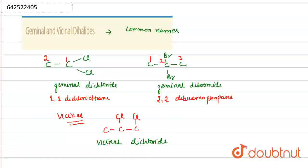Similarly, if we take example for Bromine, one Bromine is attached here, another Bromine on the adjacent carbon, then the name will be Vicinal Dibromides.